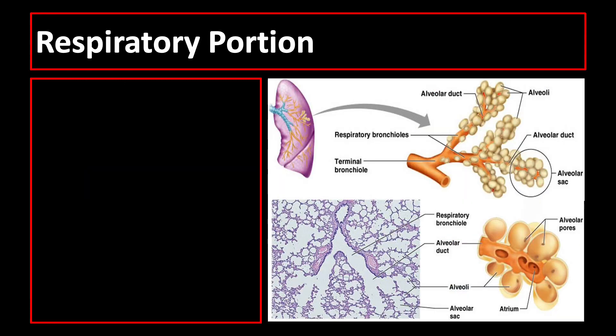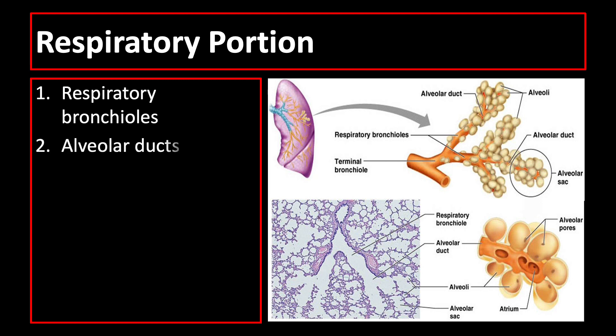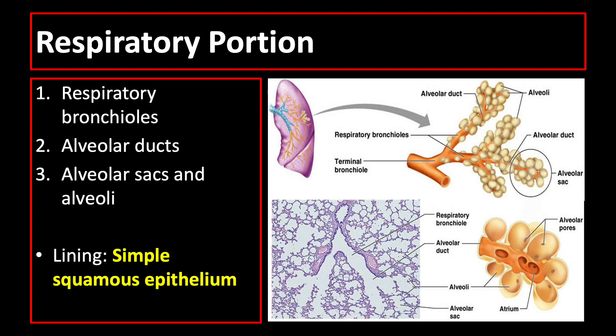The respiratory portion includes respiratory bronchioles, alveolar ducts, and alveolar sacs and alveoli. These structures are lined by simple squamous epithelium, which is a lining epithelium so thin that it allows rapid exchanges of gas like oxygen and carbon dioxide.